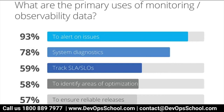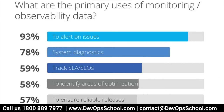Looking at some stats on the primary uses of monitoring and observability data: most data — metrics, logs, and traces — is used for creating alerts, troubleshooting, and tracking SLAs and SLOs. If you're from an SRE team, you know your job relies on SLAs and SLOs and identifying areas of optimization.